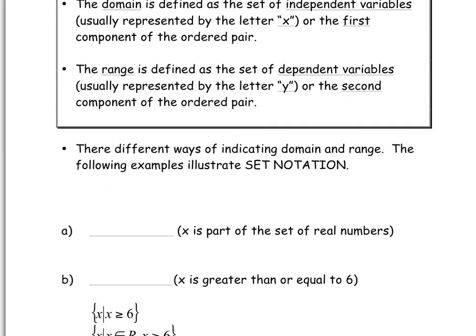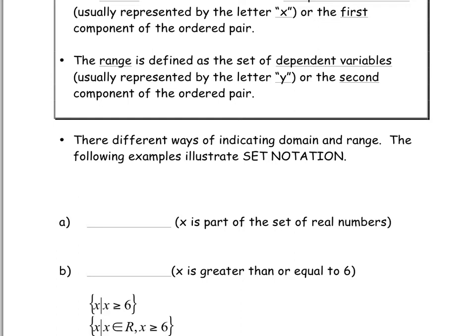There are different ways of representing domain and range. We're going to use set notation today. This is something you're used to — X is part of the real set of numbers. For example, if a graph can have any single value of X, we represent that with the set of all real numbers: X is an element of the real numbers. So X could be negative 1.2, it could be 7, it could be the square root of 5.